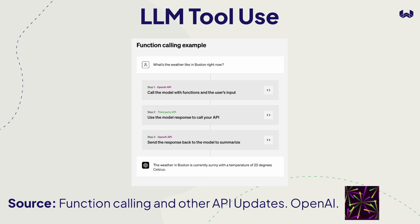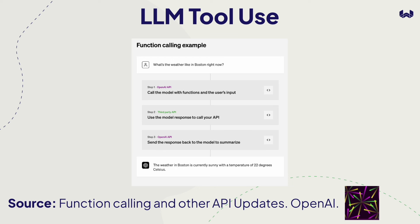This video explains the Weaviate Gorilla project. The high-level idea is LLM tool use: connecting large language models with external tools that allow them to supercharge their capabilities and be more productive generally. For example, if we want to answer the question 'what's the weather like in Boston right now?' there's no way we can rely on language modeling alone. The emerging solution is to connect large language models with third-party APIs.